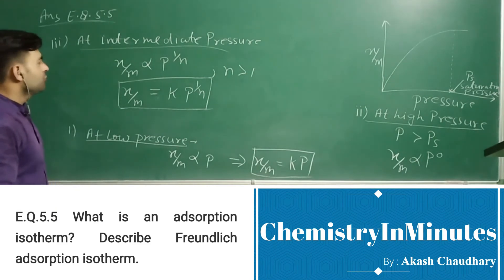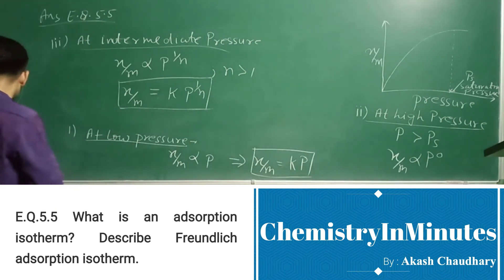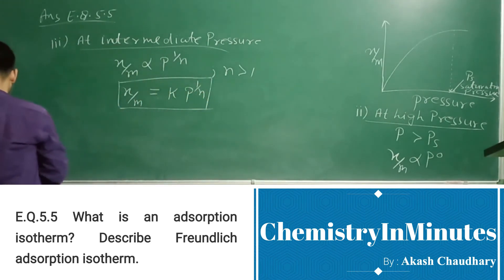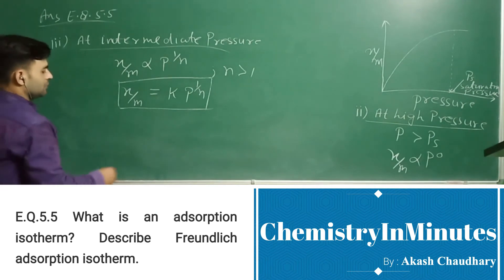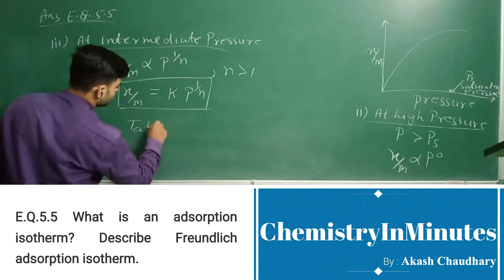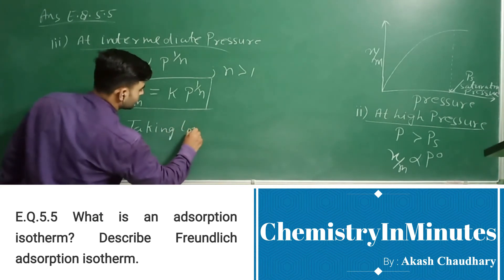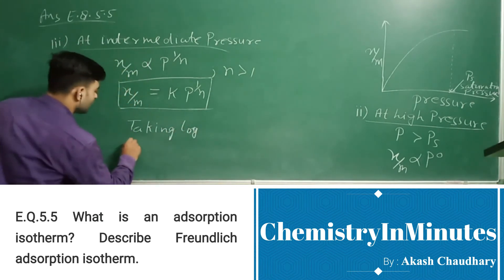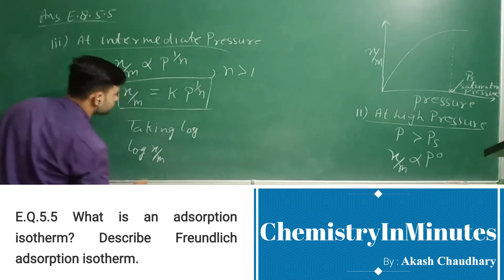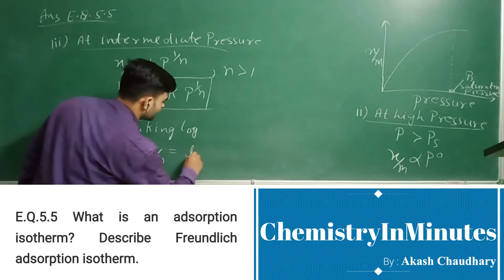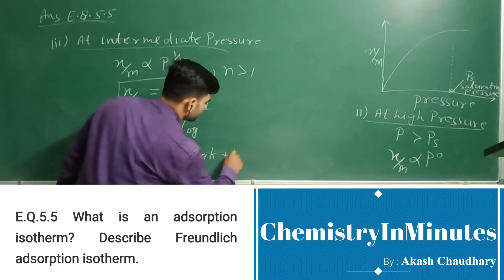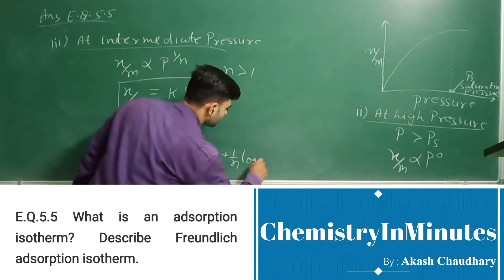Now if we take log in this equation, we get log x by m equal to log k plus 1 upon n times log p.